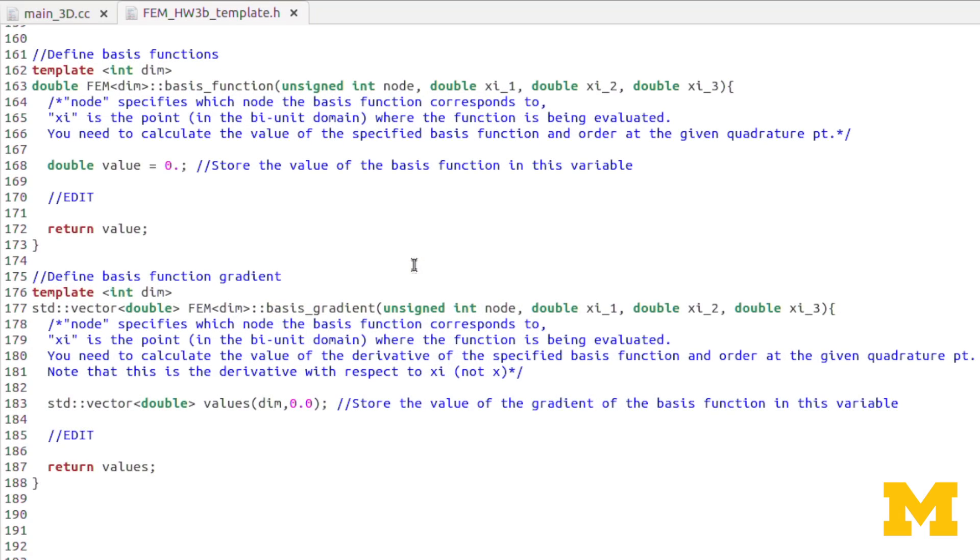So again, you'll need to use this node numbering as you're defining your basis functions and your basis gradients. And again, you can do those with an if statement, or you could even set it up as a tensor product of the 1D basis functions, that's up to you.